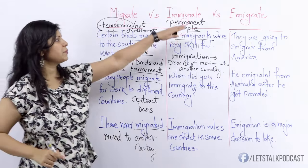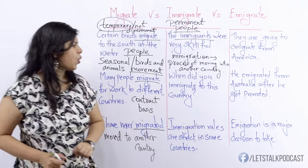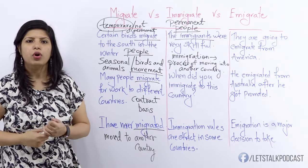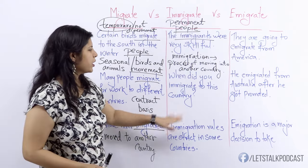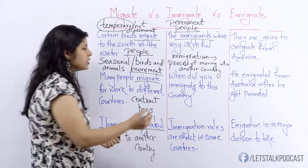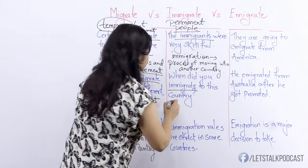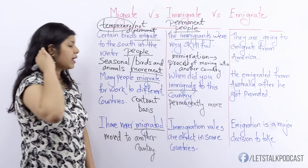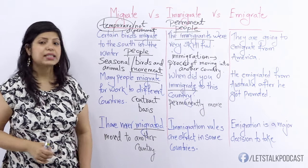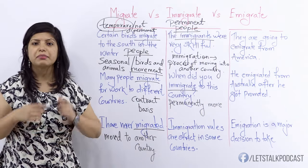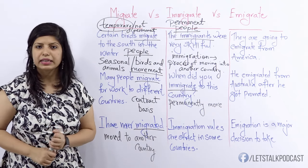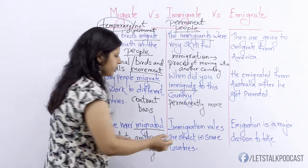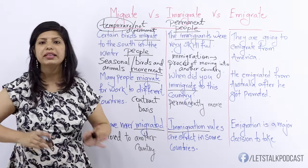So remember, to immigrate is permanent, it's to do with people. Next example: when did you immigrate to this country? So if you have people working with you or students studying with you who have immigrated into your country for good, you could ask them, when did you immigrate to this country? — which means when did you move into this country. Immigration rules are strict in some countries — obviously, because immigration is a permanent decision, there are a lot of checks that happen. Immigration is the noun form of immigrate — the process of permanently moving into another country.